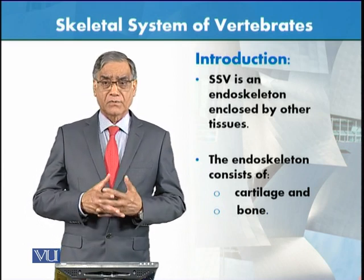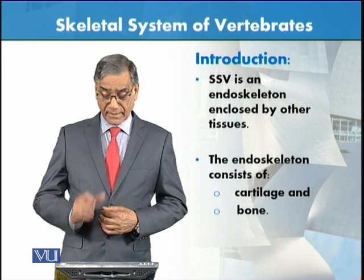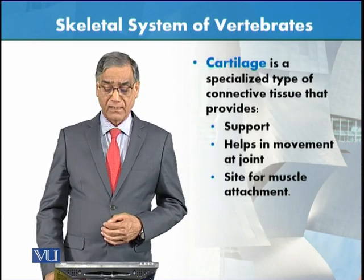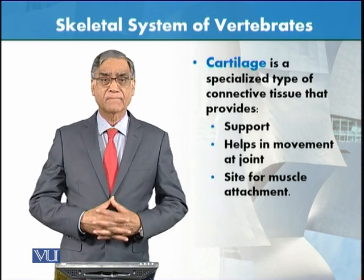The endoskeleton is composed of two main things: cartilage and bone.